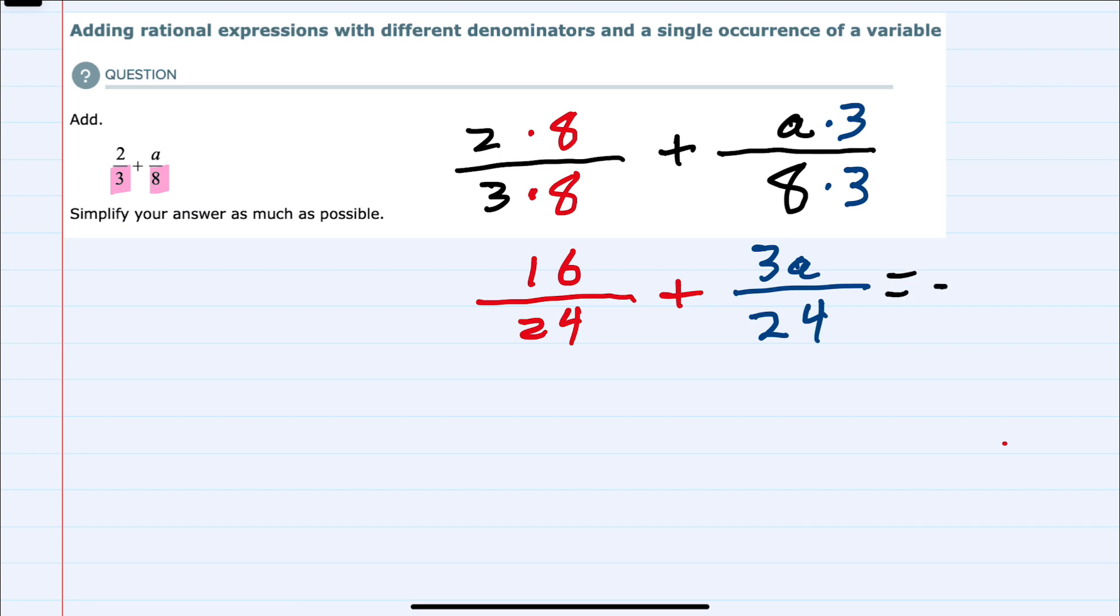We can add when we have a common denominator and we would keep that common denominator. In the numerator we can just go left to right. We have 16 plus 3a.